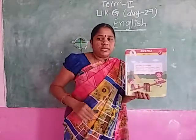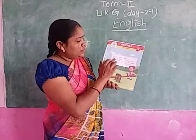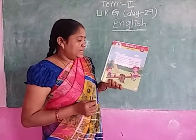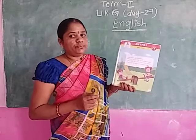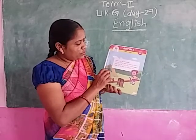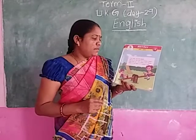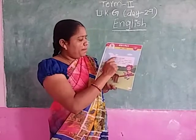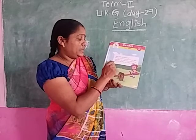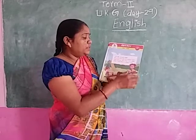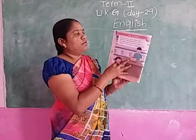Now rhymes. See saw up and down, which is the way to London town? One foot up, the other foot down, that is the way to London town. See saw up and down, which is the way to London town? One foot up, the other foot down, that is the way to London town.